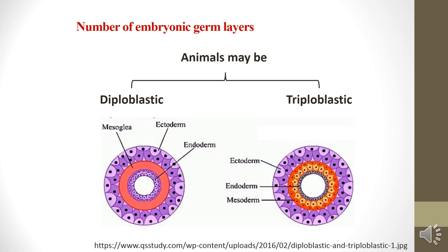In diploblastic animals, the external ectoderm and internal endoderm are the two layers. Animals in which the developing embryo has three germinal layers are called triploblastic animals, consisting of outer ectoderm, inner endoderm, and middle mesoderm. Most triploblastic animals show organ system level of organization.